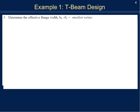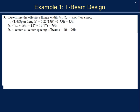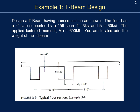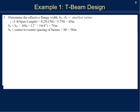We need to determine the effective flange width b_e, which is based on ACI code — the least of three values: one-quarter of the span length (15 feet / 4 = 3.75 feet = 45 inches); the web width plus 16 times the flange thickness (12 + 16×4 = 76 inches); or the center-to-center spacing of beams, which is 8 feet = 96 inches. The smallest is 45 inches, so b_e = 45 inches.